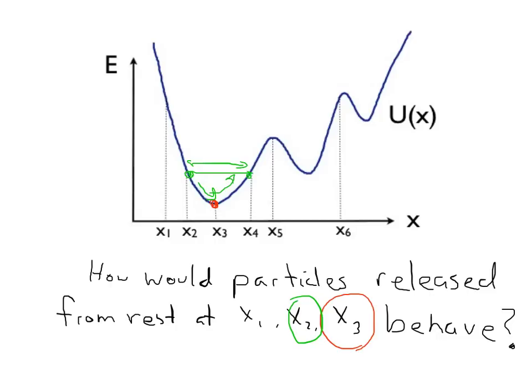Finally, for point X1: something released at rest at point X1 is going to head down the slope towards point X3, the potential minimum. By the time it gets there, it will have a huge amount of kinetic energy, and it's going to go back up the slope all the way until it reaches a potential energy that's just as high — where the kinetic energy equals zero. Total energy is conserved, so it will oscillate back and forth between point X1 and point X6.